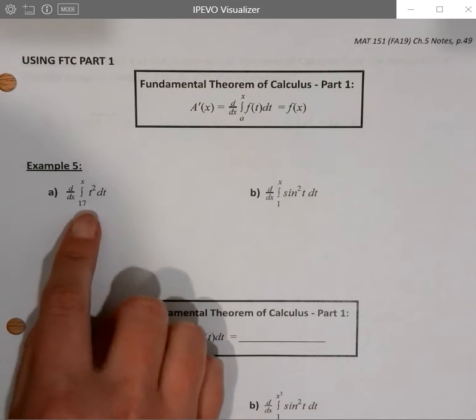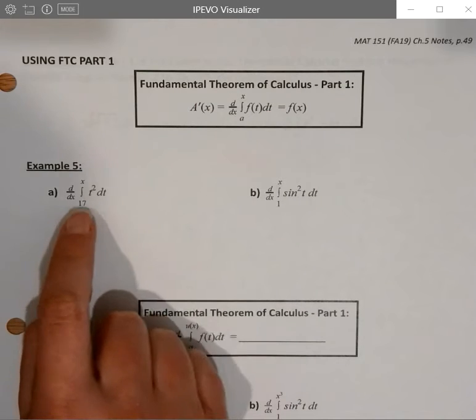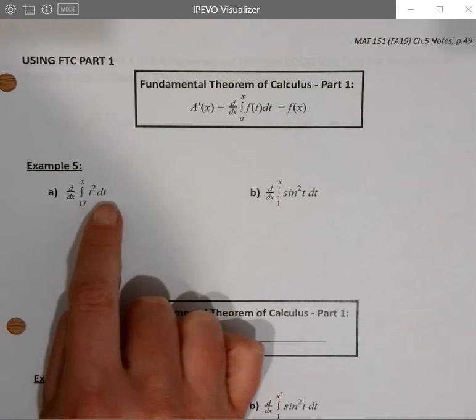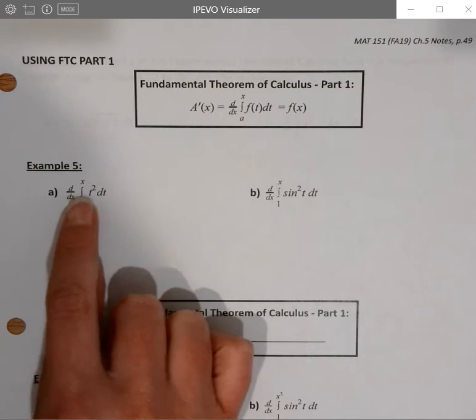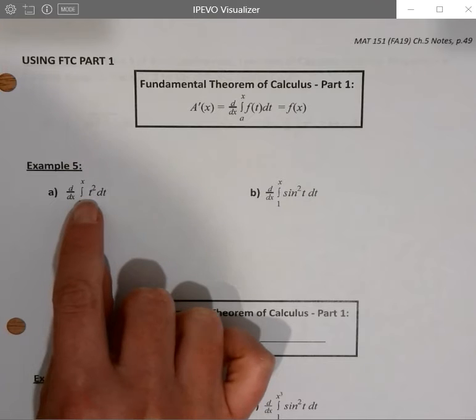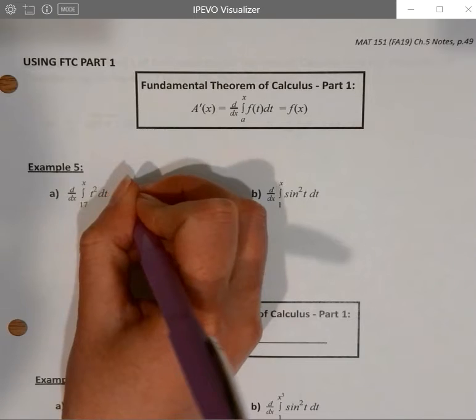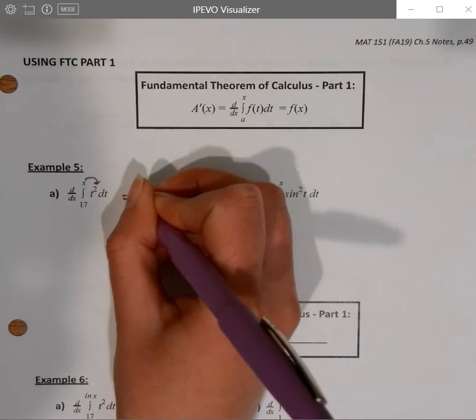So if I have something that looks like the derivative of the integral of t squared dt bounded between 17 and x, since the derivative and the integral are opposites, they're undoing each other, this is going to give me back x evaluated at t.